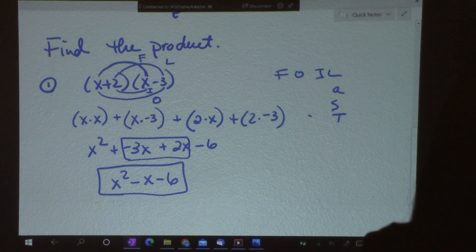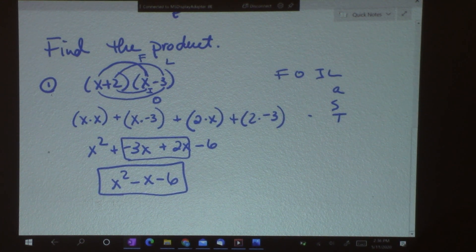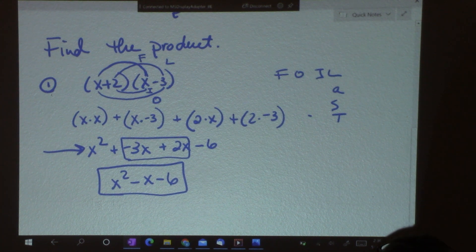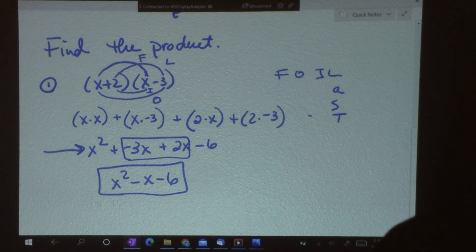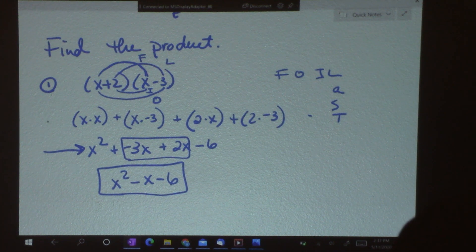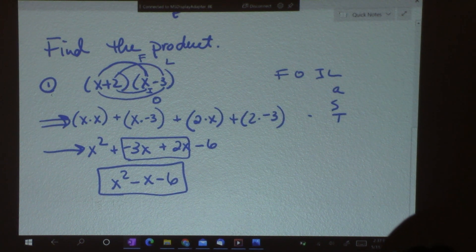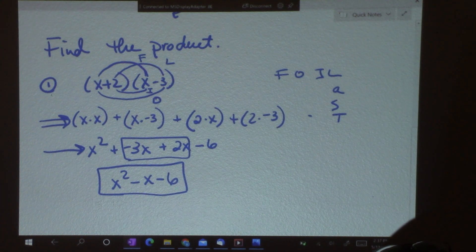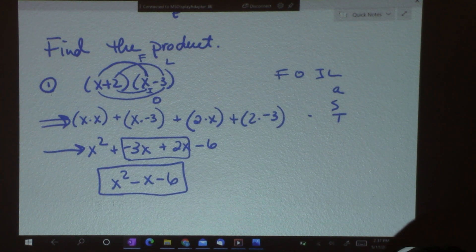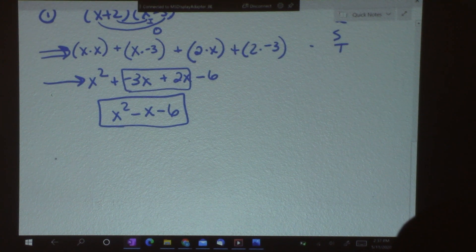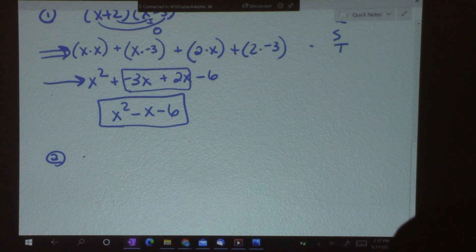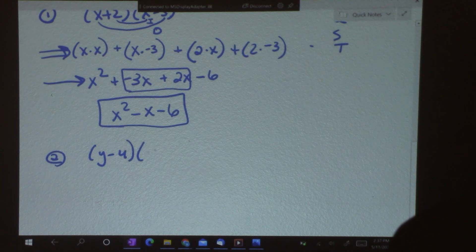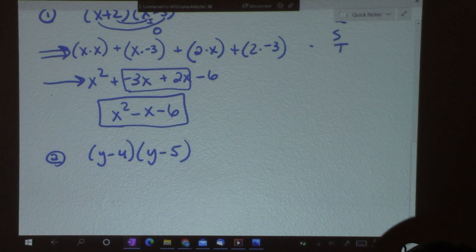Now, when you're showing your work, you want to make sure you at least have that. That line there. And then, your simplification. At first, it's a really good idea to do both lines to help make sure you've got it straight. But once you can go a little faster, that's fine. But you do want to make sure you're not doing it all in your head, but you're writing stuff down. So, let's do another one. Number 2. Find the product of y minus 4 times y minus 5.